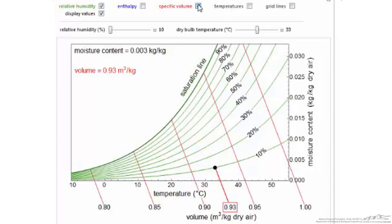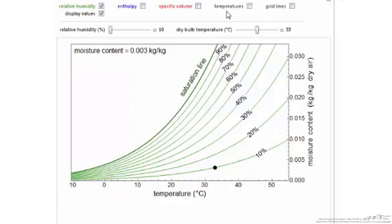Specific volume is the next variable that will be shown on the plot. First, I will hide the enthalpy values. Specific volume has units of volume per mass of dry air or cubic meters per kg of dry air for this plot. The lines are close to vertical and have a negative slope.